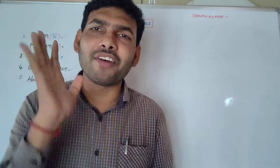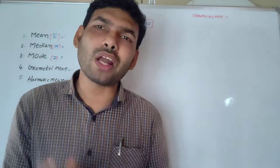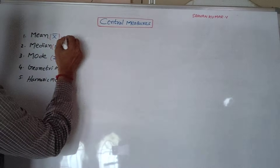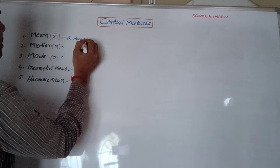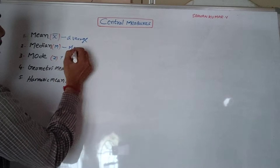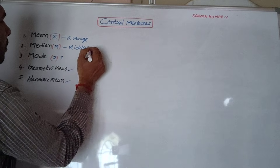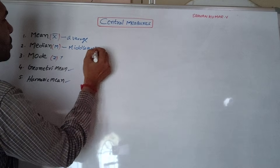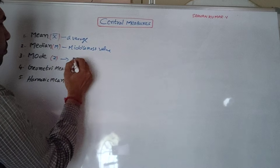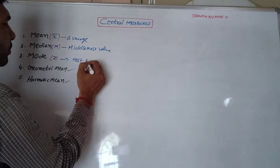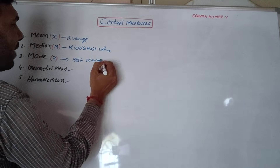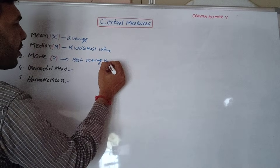Mean means average — that is one word: average. Median means middle most value. Mode means the most occurring value, or most repeated value — a value which has maximum frequency.